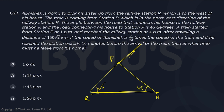Is this a geometry question? Okay. A train traveled from station P at 1 p.m. and reached railway station R at 4 p.m., after traveling a distance of 150√2. Which means this side also should be 150√2.